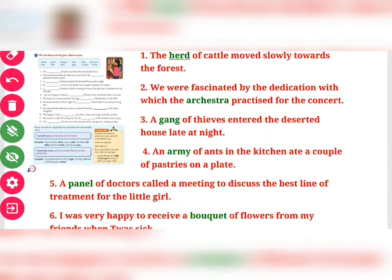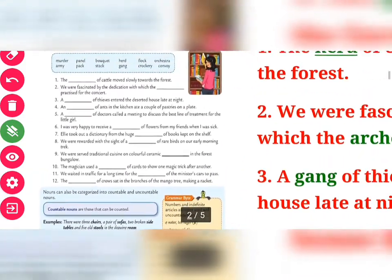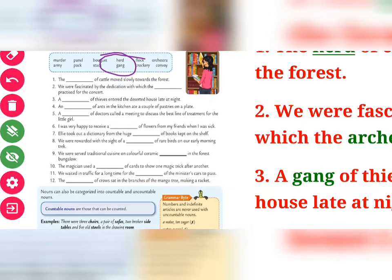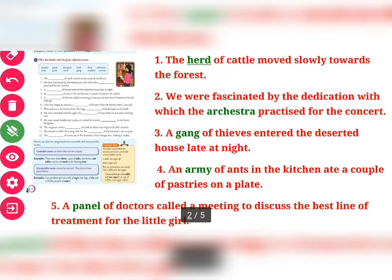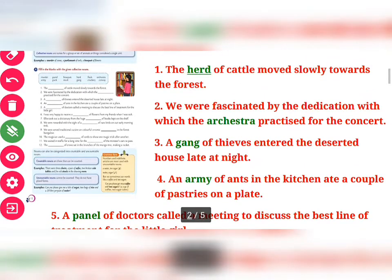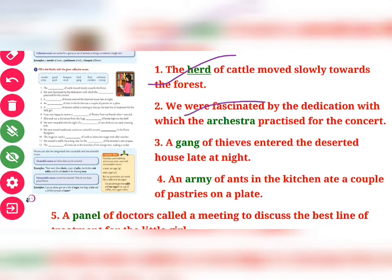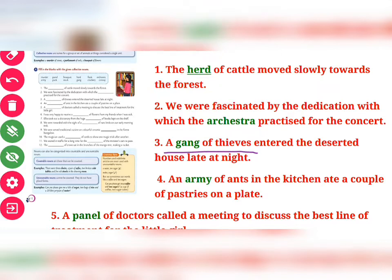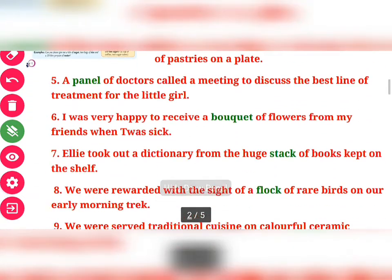"The herd of cattle moved slowly towards the forest" — 'herd' is given, so you will underline and highlight it. Second: "We were fascinated by the dedication with which the orchestra practiced for the concert" — 'orchestra' is a collective noun. Third: "The gang of thieves entered the deserted house late at night" — 'gang' is a collective noun. Fourth: "An army of ants in the kitchen ate a couple of pastries on the plate" — 'army' is a collective noun.